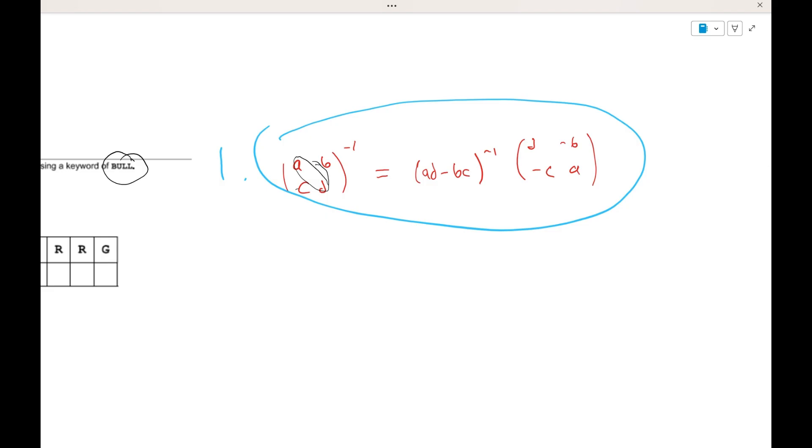Now we're going to compute the inverse. Let's start off by computing the determinant. And one thing that you always need to remember is that every answer that you find has to be in mod 26. So that just means that your values can range from 0 to 25, but the moment that it hits 26, you reset again at 0.